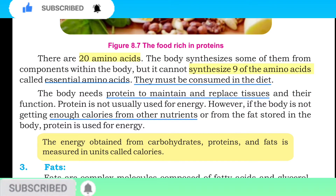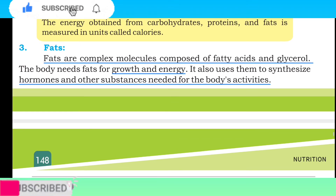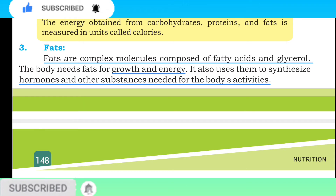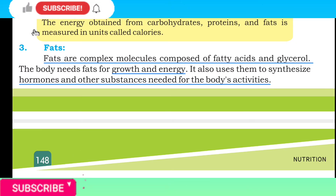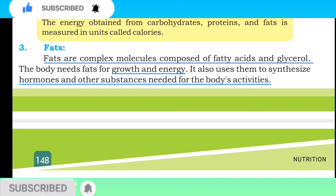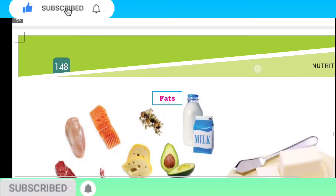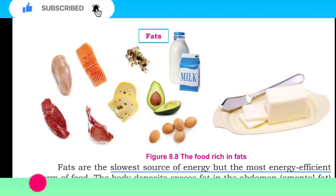The energy obtained from carbohydrate, protein, and fat is measured in units called calories. Fats are complex molecules composed of fatty acids and glycerol. Fat jo complex molecule hai jo fatty acid aur glycerol ka bana hota hai. The body needs fats for growth and energy, and also uses them to synthesize hormones and other substances needed for the body's activities.